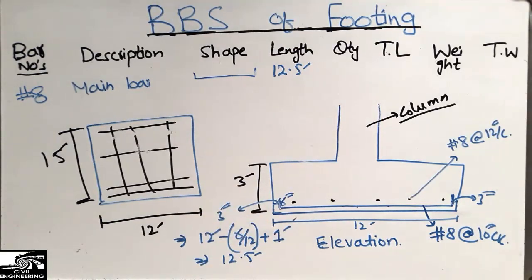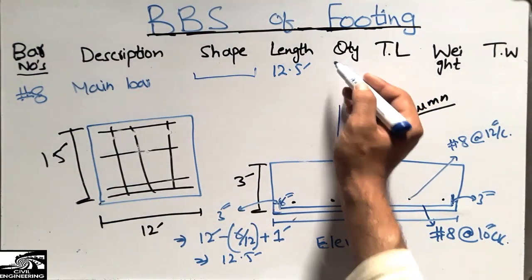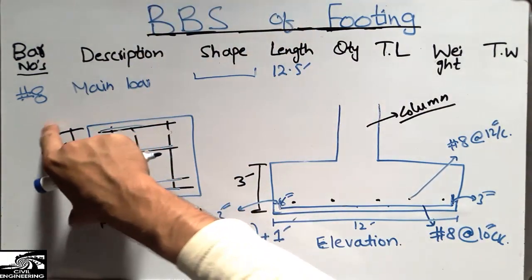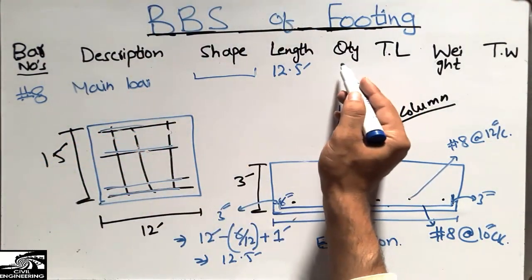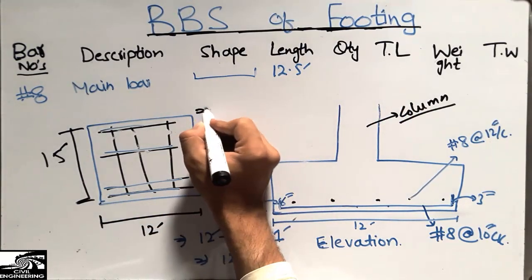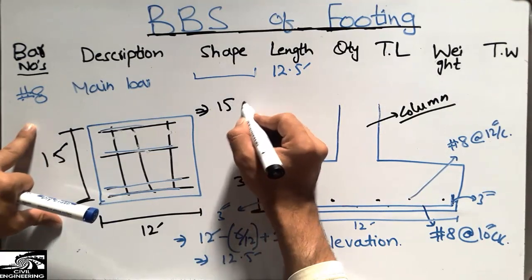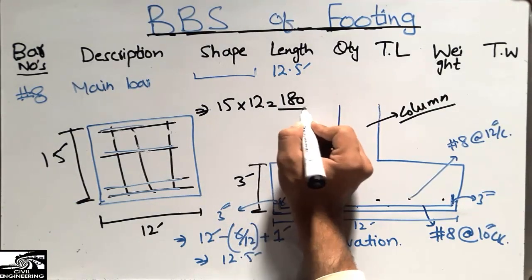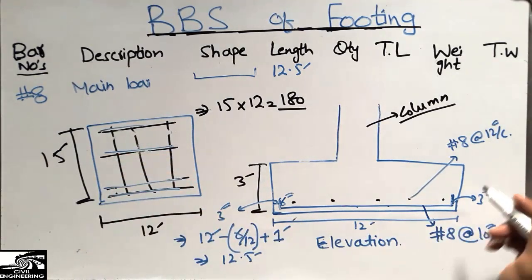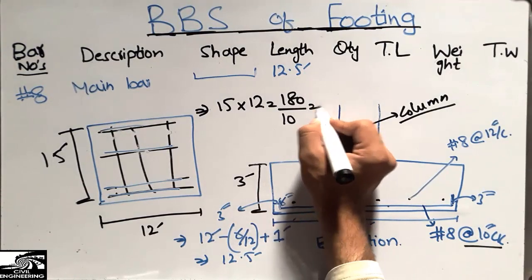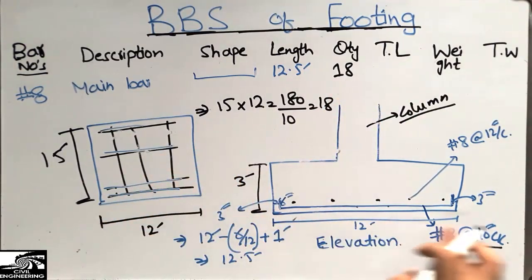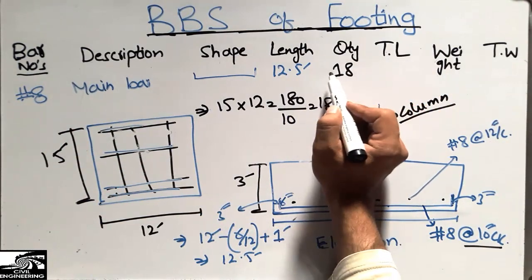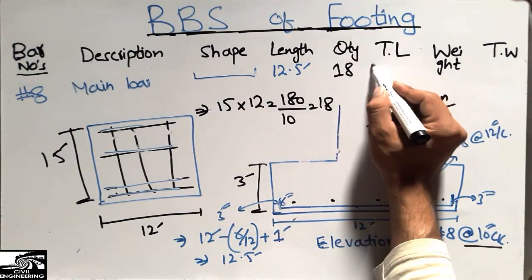The bar length is 12.5 foot. For the quantity: the main bars are placed along the 15-foot direction. Converting 15 foot to inches gives 180 inches. Dividing by the spacing of 10 inches center to center, we get 18 bars. So 18 number of main reinforcement bars are used throughout the 15-foot length. The total length is 18 multiplied by 12.5, which gives 225 foot.